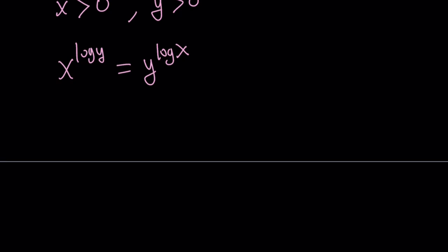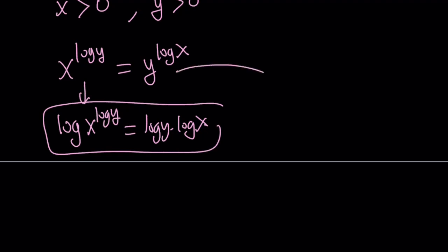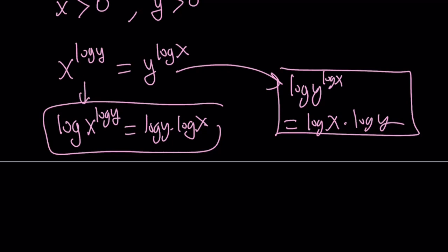Why are they equal? Because if you log each one, for example, if you log x to the power log y, you get log y times log x. If you log y to the power log x, you get log x times log y. And then I compare the results. The logs are equal, right? Therefore, the expressions are also equal because the log function is a bijection.